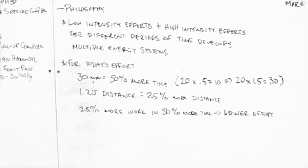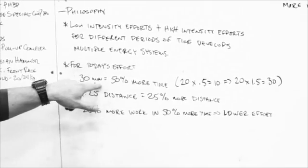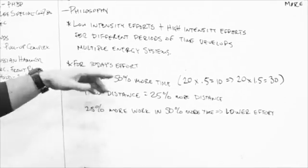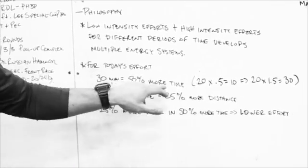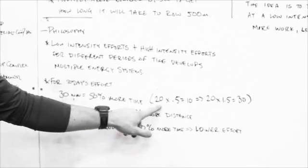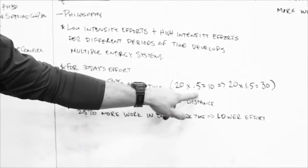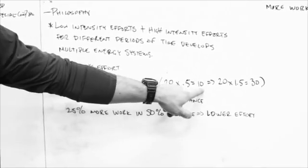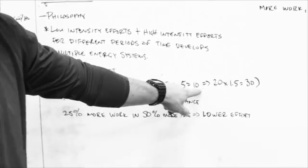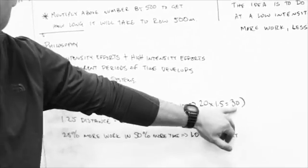So for today's effort in general, and we'll look at step ups here in a second, but in today's effort, we have 30 minutes to do the row. Well, 30 minutes is 50% more time than the assessment. The assessment was 20 minutes. If we take 20 minutes and we multiply it times 0.5 or 50%, then we get 10. If we then add that 10 back into the 20, so 20 times 1.5, we get 30 minutes.